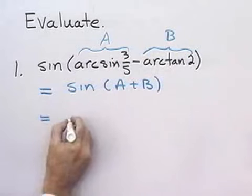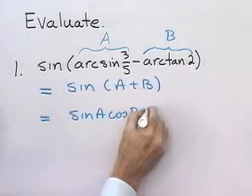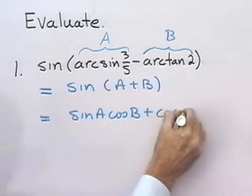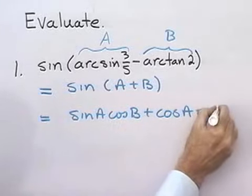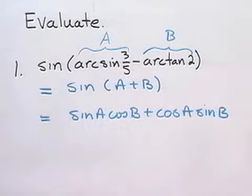Which I know from my expansion formulas is going to be sine A cosine B plus cosine A sine B. So, let's see if we can find the sine and cosine of A and the sine and cosine of B.